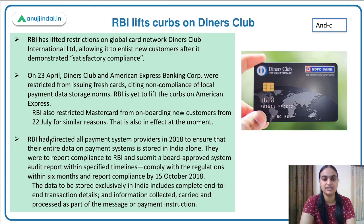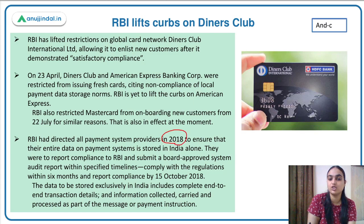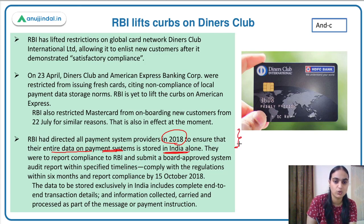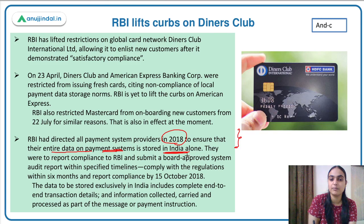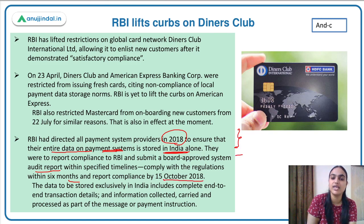Let's discuss this in detail. In 2018, RBI directed all payment system providers to ensure that their entire payment system data is stored in India alone. These payment system providers were required to report compliance and submit a board-approved system audit report within specified timelines — within 6 months and by 15th October 2018. So these rules and regulations had a defined compliance deadline.